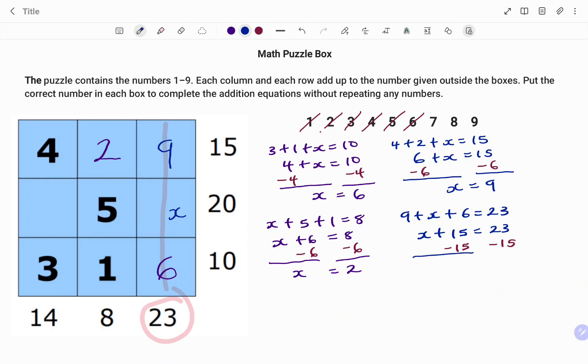I'm left with my left hand side x equals on my right hand side 23 minus 15 will give me eight. So therefore I'm going to replace my x with eight.